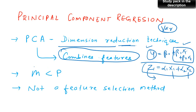So the number of principal components used will always be less than the number of features. You can have as many principal components as the number of predictors — if there are p predictors you can have p principal components — but the number used in PCR regression is always less. If you use the same number of principal components as the number of features, you are not reducing the dimension; you are essentially going ahead with the same dimension, so it doesn't serve the purpose.